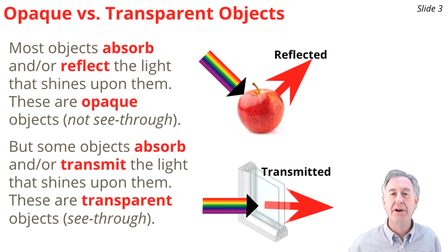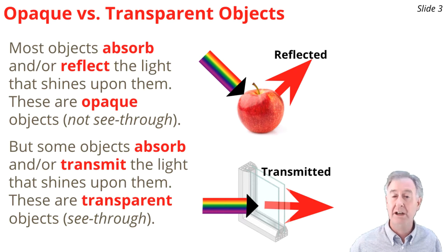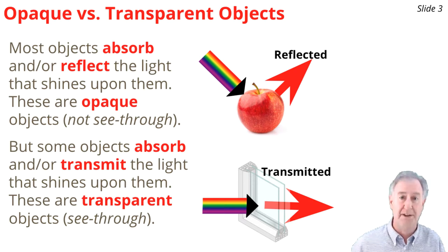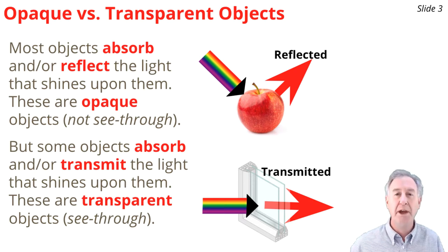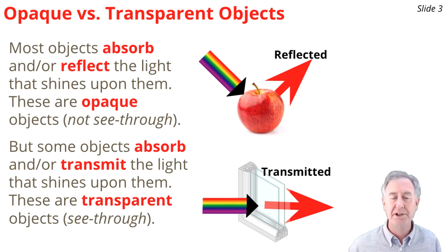Before we talk about colored filters, let's talk about two classes of objects. First, opaque objects. Opaque objects are objects that take incident light and absorb some and reflect the rest. Opaque objects cannot be seen through because no light passes through them. An apple is an example of an opaque object.